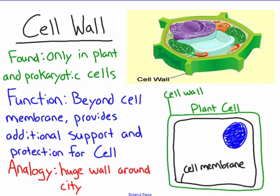The cell wall is often confused with the cell membrane, but it is not the same thing. It is only found in plants and prokaryotic cells. The function is to provide more support and protection for the cell. The cell wall is actually beyond the cell membrane — so if you're going into the cell, the cell wall comes first, then the cell membrane. My analogy for this is a huge wall around the city.